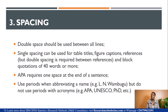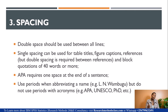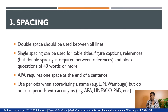APA requires one space at the end of a sentence, and you use periods when abbreviating a name, as shown in the examples. However, do not use periods with acronyms. For instance, you cannot write A.P.A. with periods — APA, UNESCO, and PhD are acronyms and do not use periods. For names, you use periods as shown.